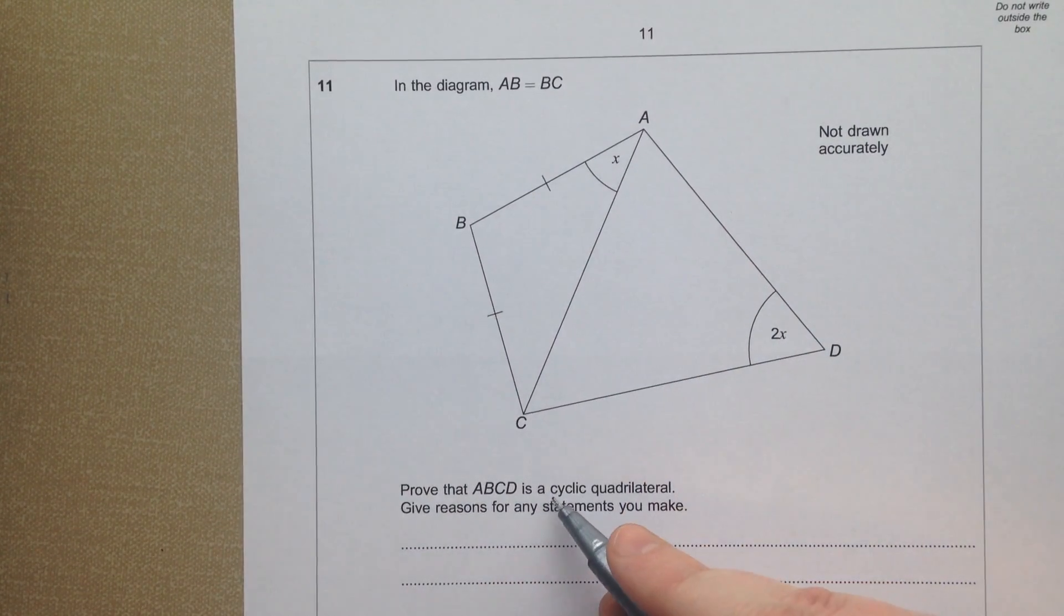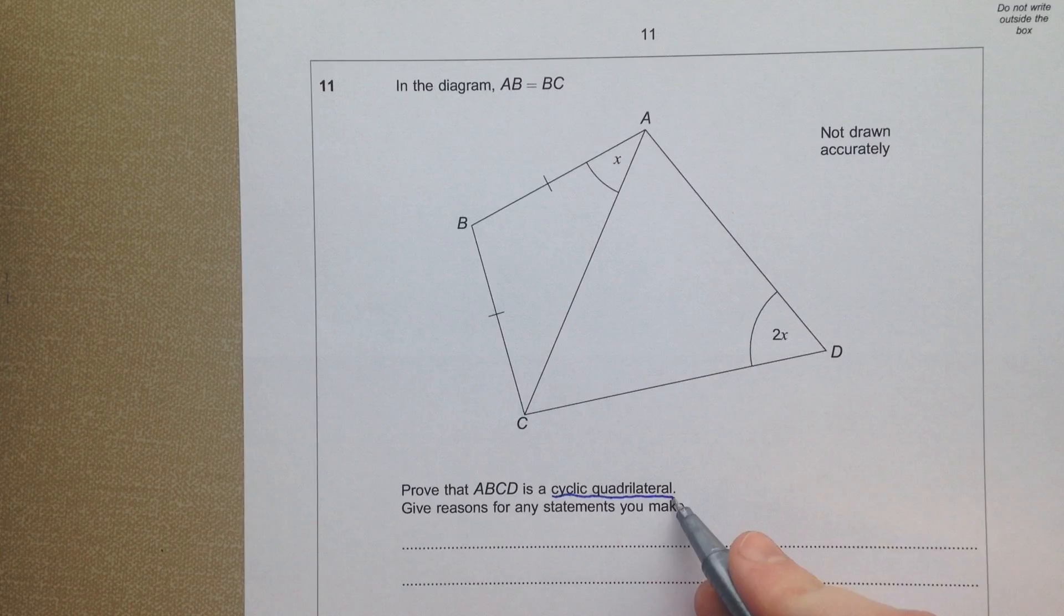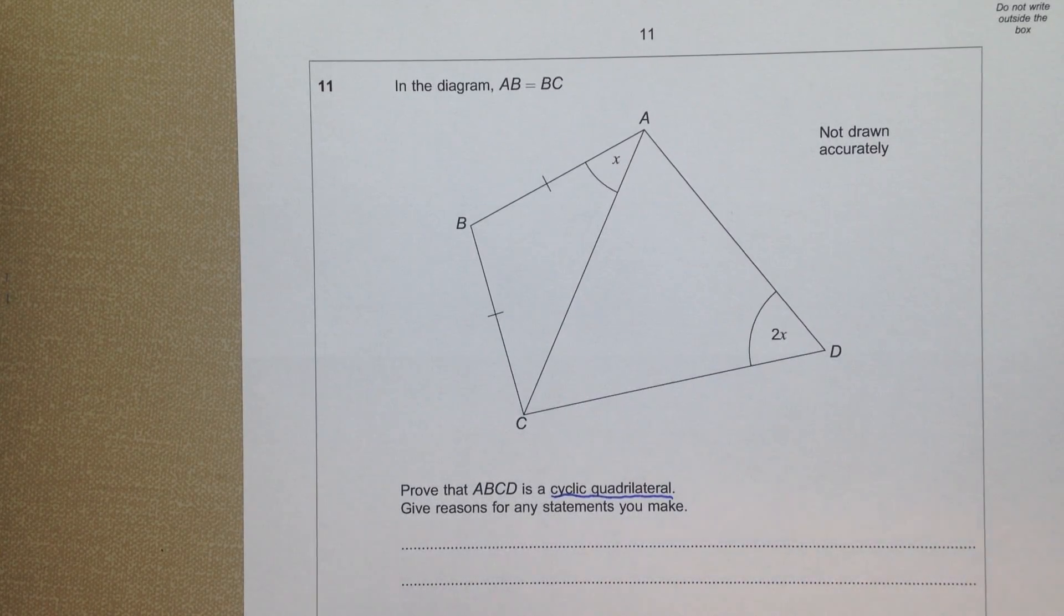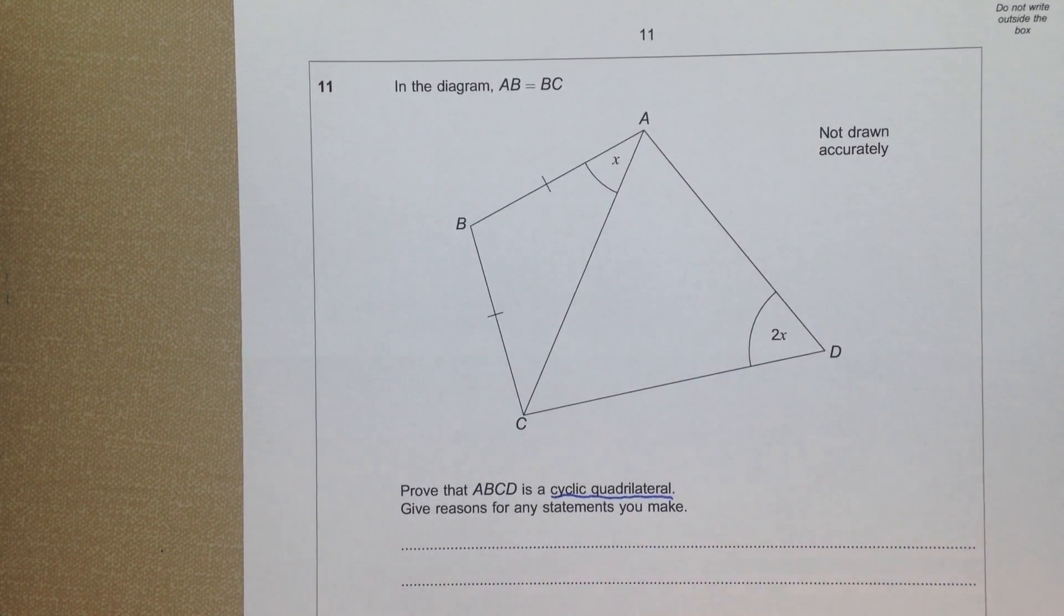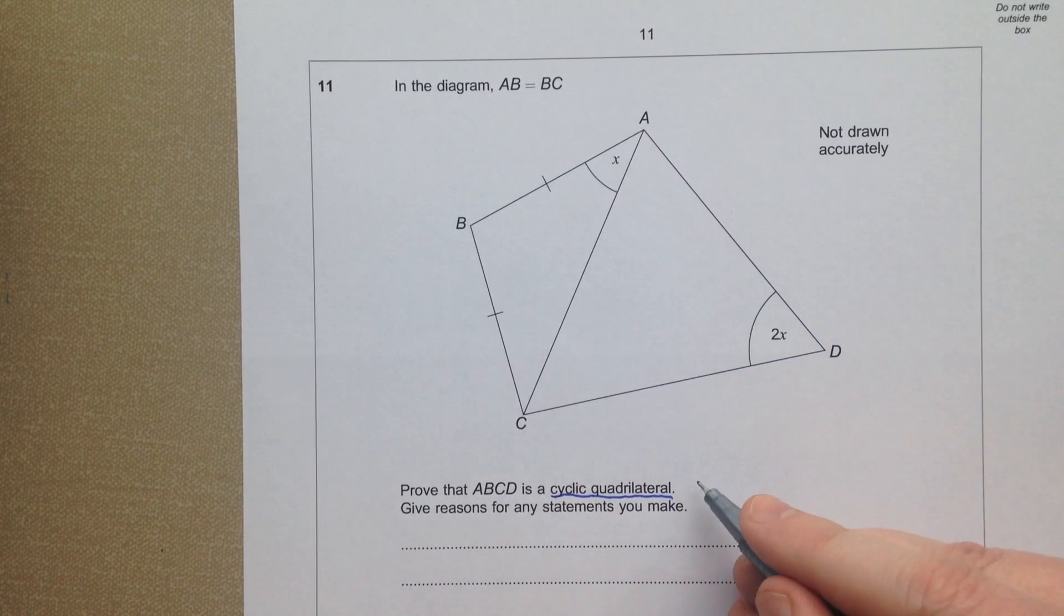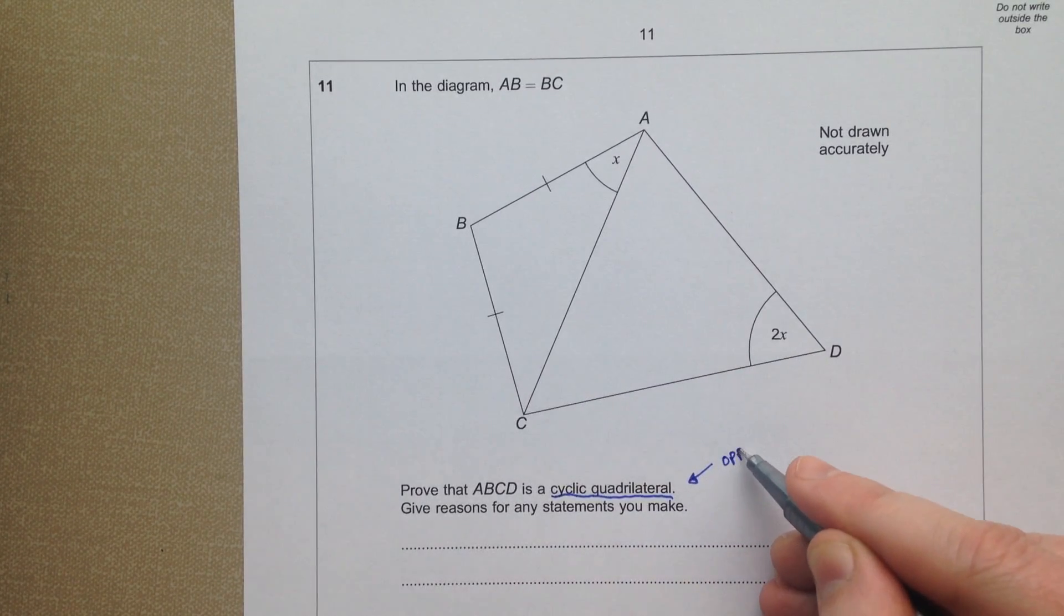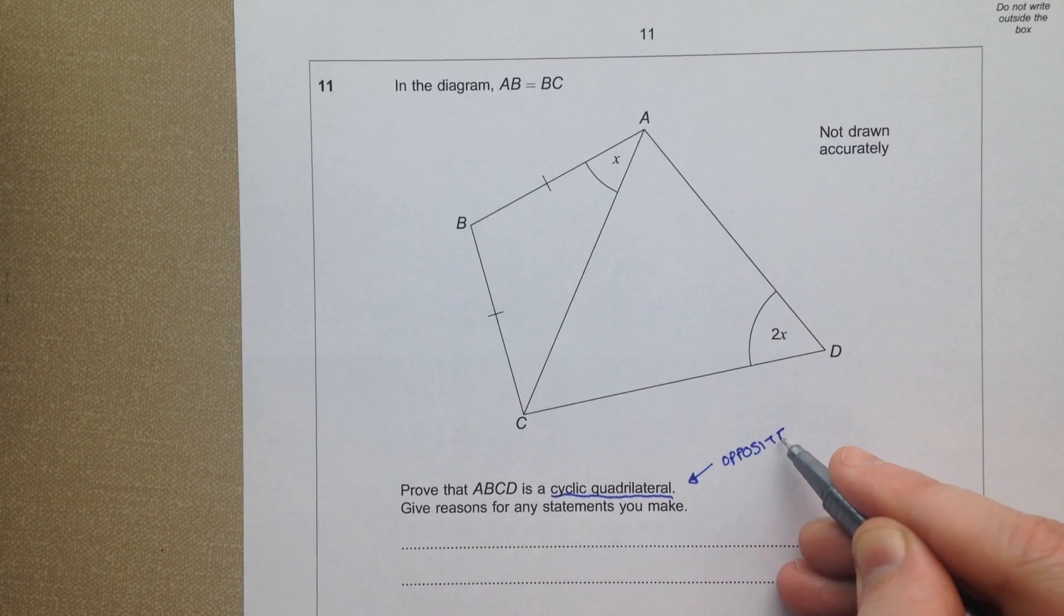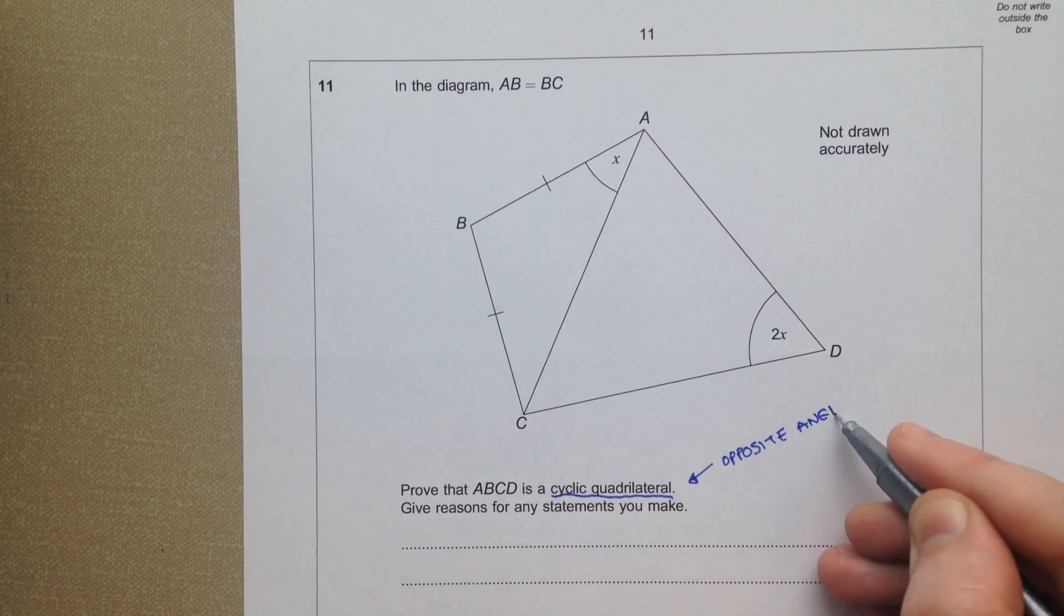This is a rather unusual question about a cyclic quadrilateral. Normally we have a circle drawn for us. We have to think about what we know about cyclic quadrilaterals, and that is that opposite angles make 180.